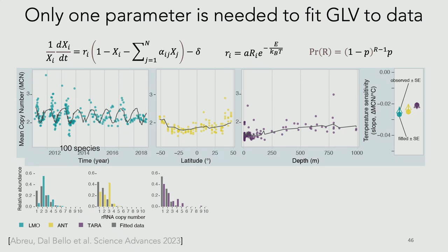An audience member asked how the competition coefficients and mortality rates relate to the single fitting parameter P. The answer is that the alphas are drawn from a random set of parameters and the result doesn't change — only P, derived from the original dataset, is needed to fit the model. With colored bars showing measured relative abundance of each copy number in the data, and black bars showing the simulation output, the model recapitulates the data well with just this one parameter.